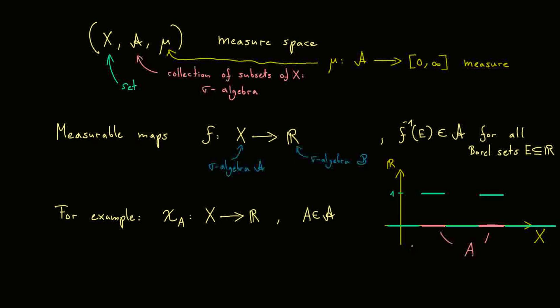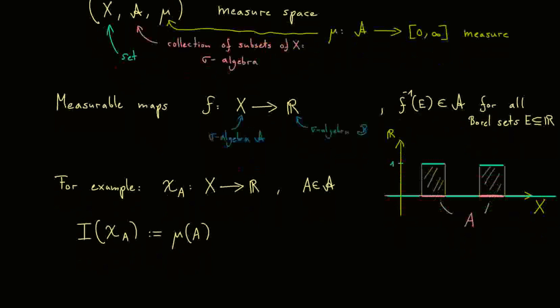For visualization of the integral, it's always good to see the integral as the area below the graph and the x-axis. Here, this would mean we look at this area here. And because the value of the function is just 1, it does not matter how abstract this whole measure space is — this area should be exactly the same as the volume, the measure of the set A. A meaningful integral notion, let's call it just capital I, of this characteristic function should always fulfill that this integral is the measure of the set A. So you should read this indeed as a definition — now you know how to integrate characteristic functions.